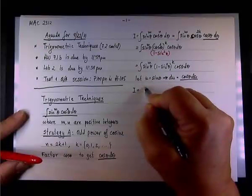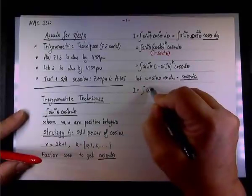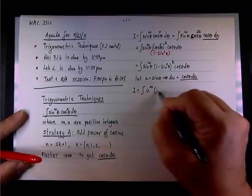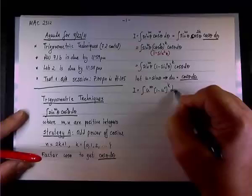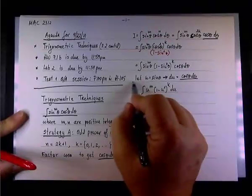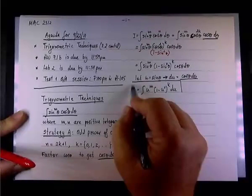which we were smart enough to get by factoring cosine theta. Okay, so now we substitute back, and we say our integral i will be written as the integral of u to the power of m times 1 minus u squared to the power of k du.